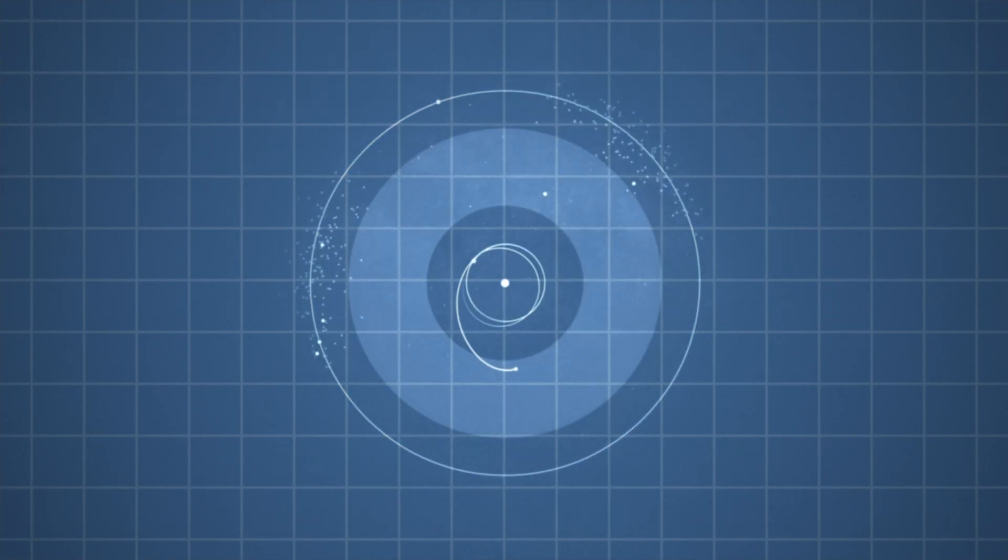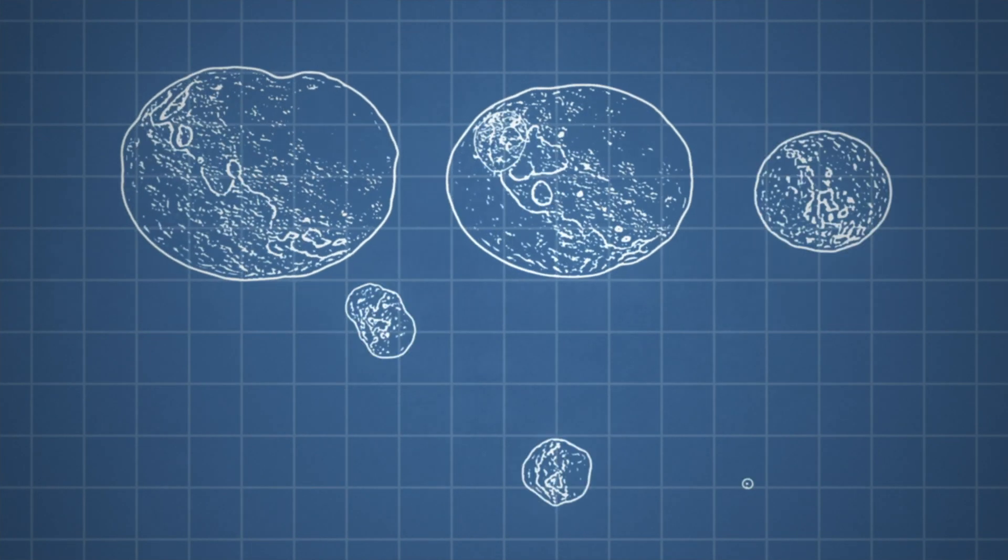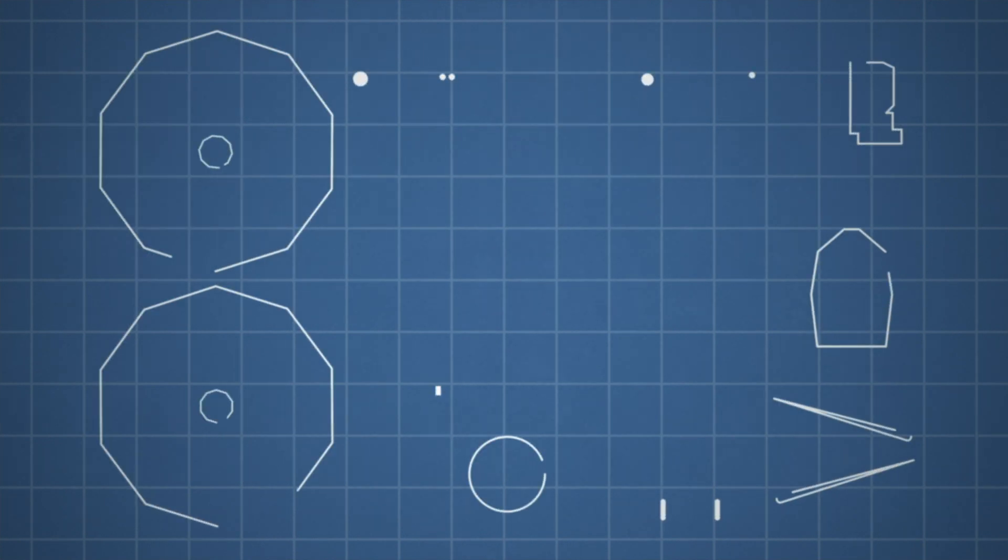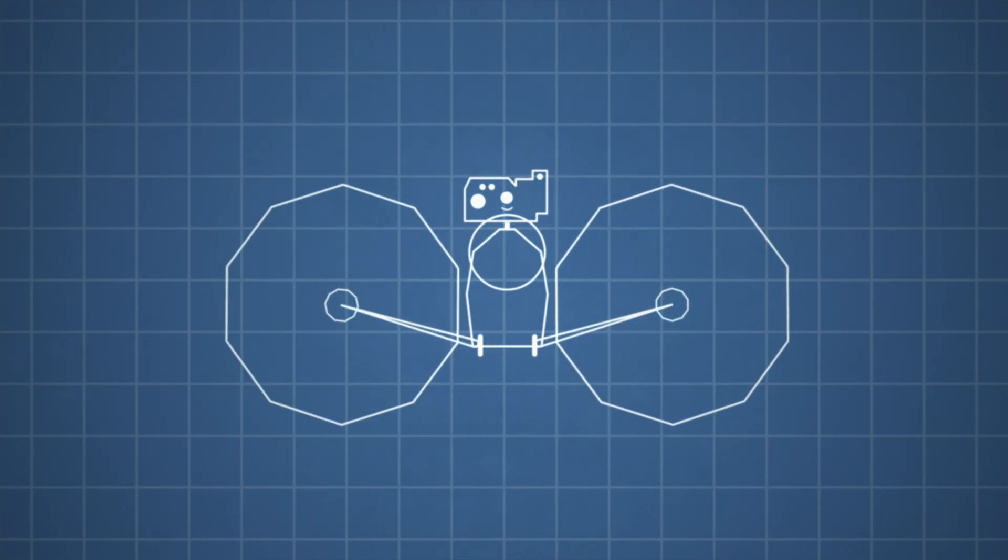It took a team of scientists and engineers many years to plan where Lucy would go and what she would have to do. Then, Lucy's engineers had to build her out of individual parts and put her together like a puzzle.